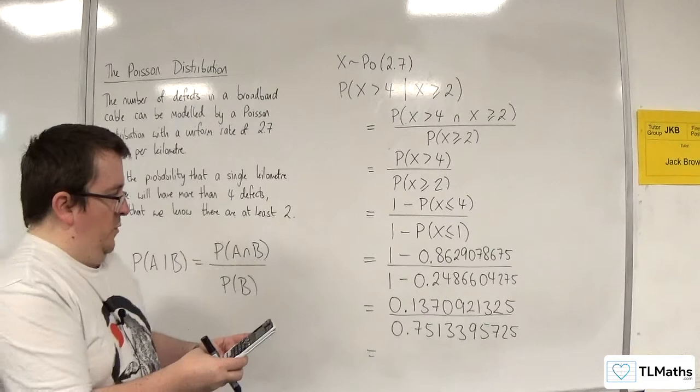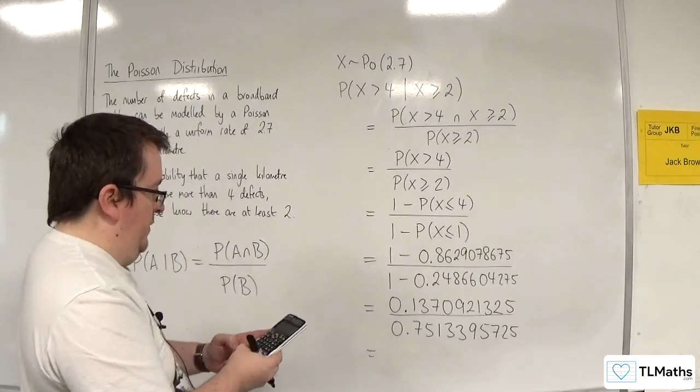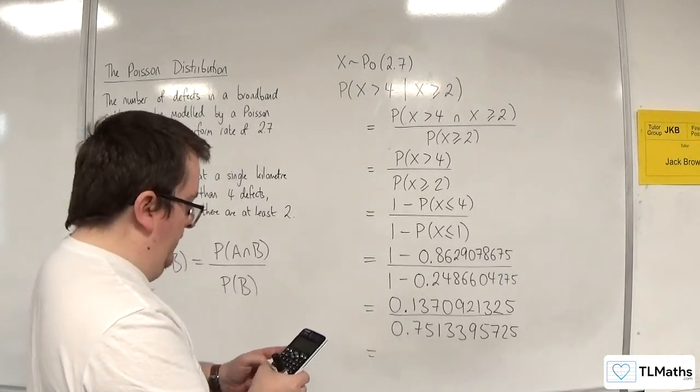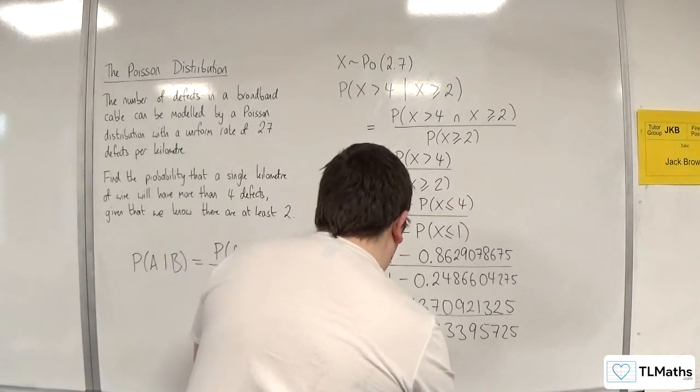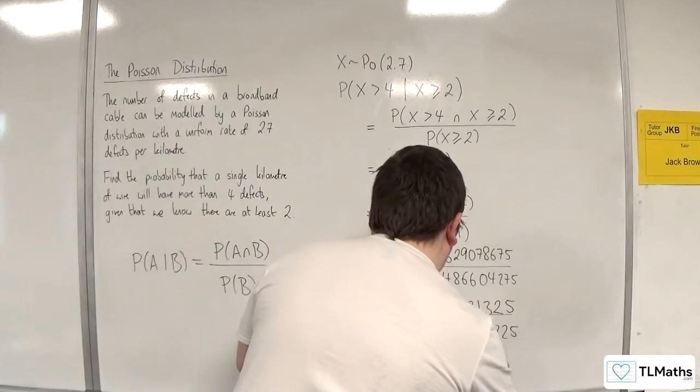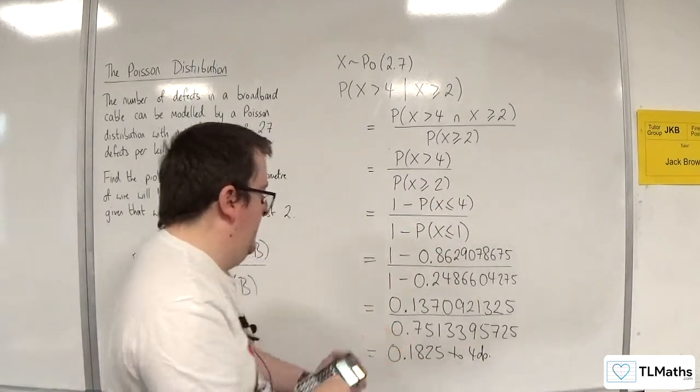And the denominator is 0.7513395725. So 0.1370921325 divided by 0.7513395725, and we should get 0.1825 to 4 decimal places.